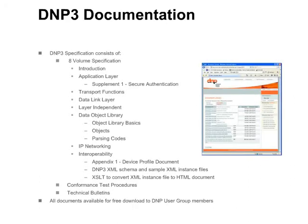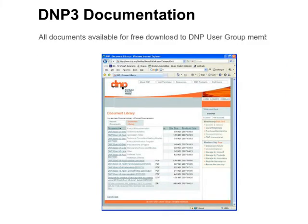DNP-3 documentation includes the specification, conformance test procedures, and technical bulletins and application notes. The DNP-3 specification is provided in eight volumes. Volume 1, the introduction, provides a good overview of the protocol. The remaining volumes provide details on various aspects. Some volumes contain more than one part — for example, the data object library consists of three parts. All of the DNP-3 documentation is available for free download from the DNP website by DNP user group members.